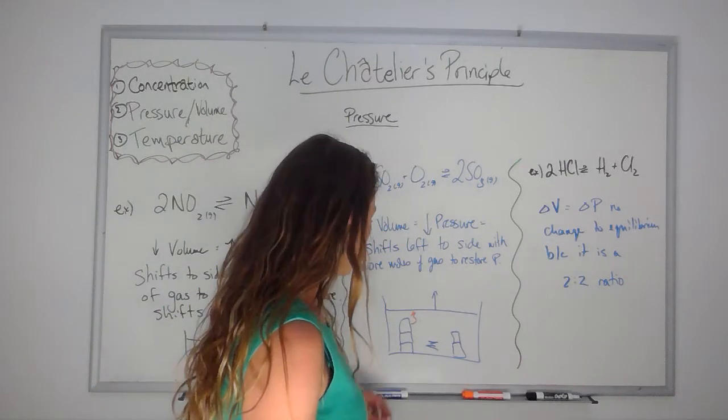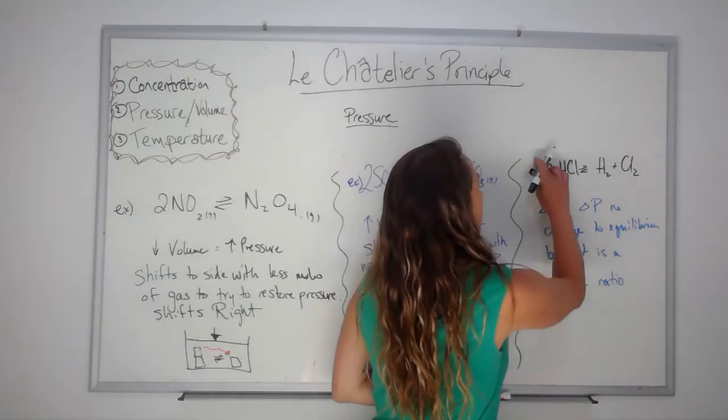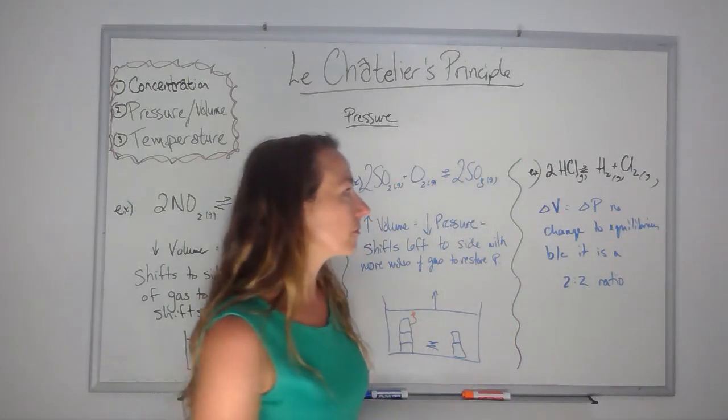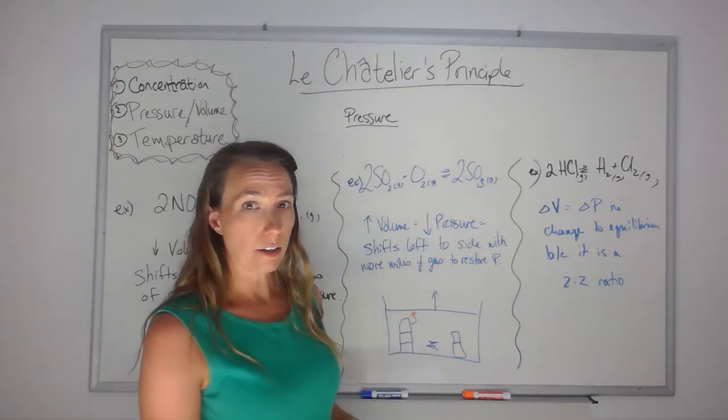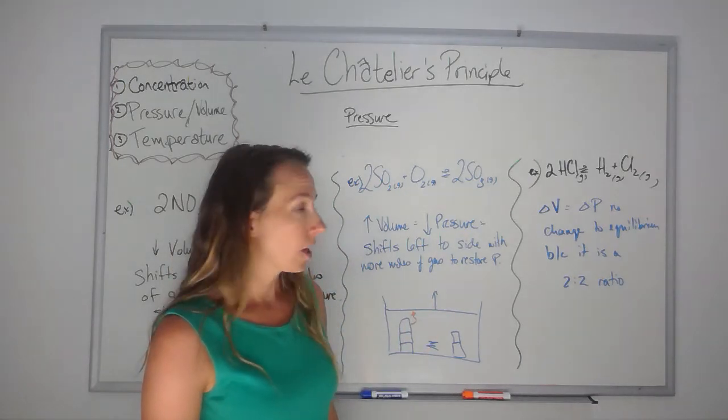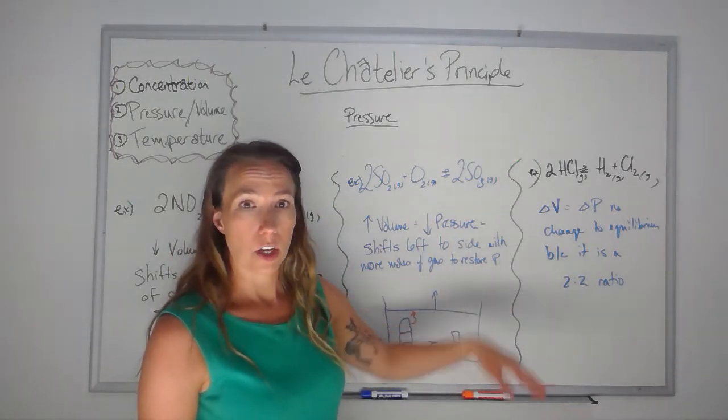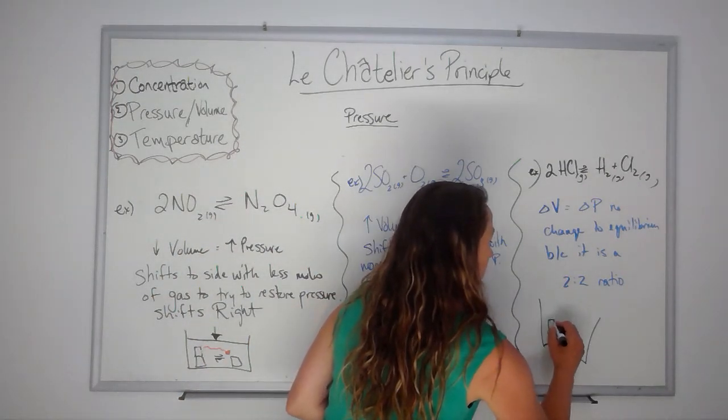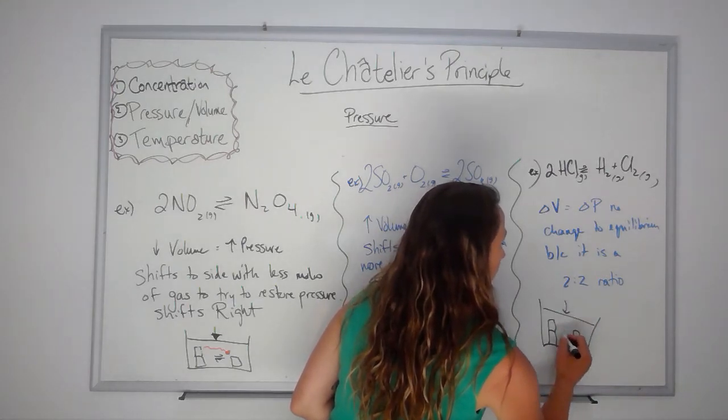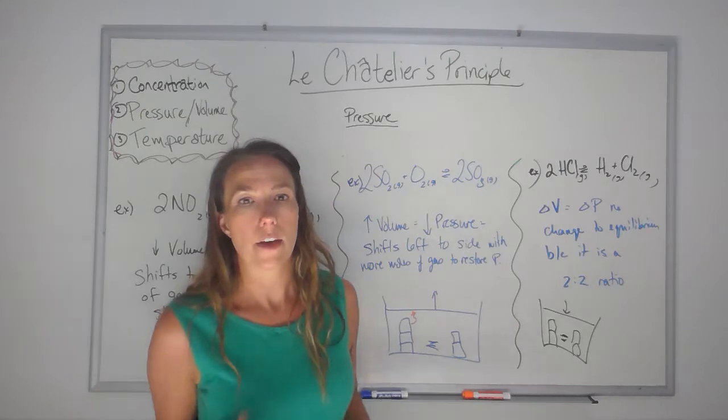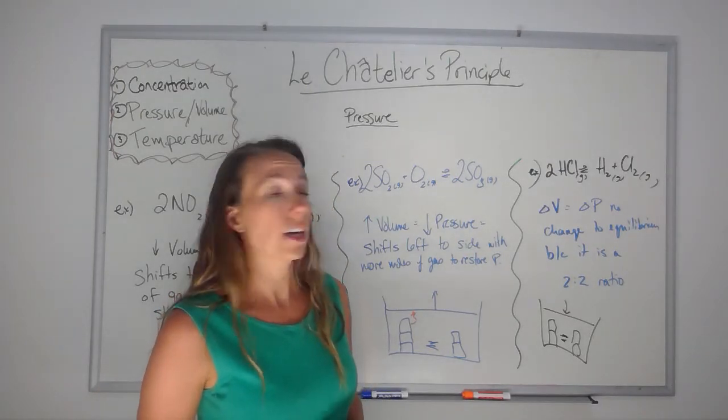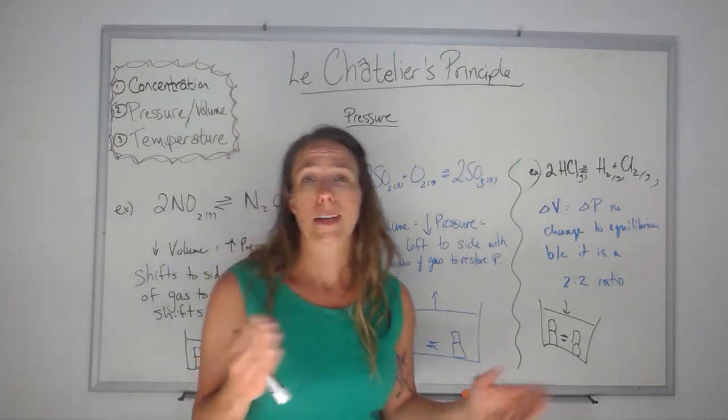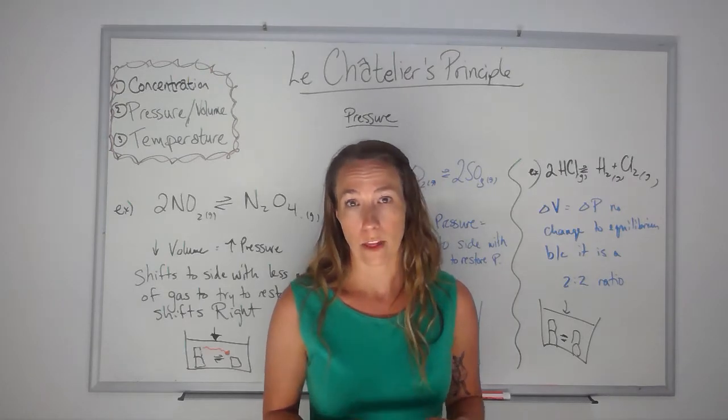One more example. Here I have some HCl. These are all gases. If I change the volume here it is not going to change the pressure because it's a 2 to 2 ratio. So if I have these blocks that are exactly the same height, 1 to 1, no matter if I squish or lift up or whatever they're both affected at the same time. So changing the volume to change the pressure in this situation would have no change on the equilibrium because shifting left or right does not get to restore that pressure for it.